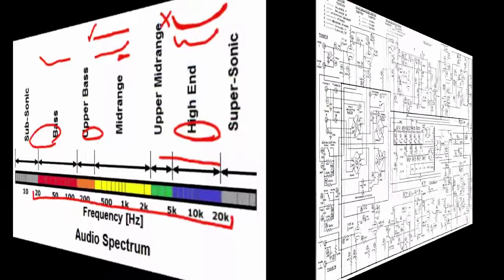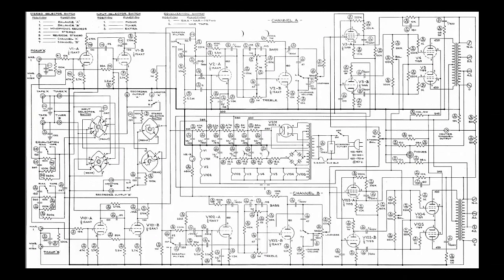Now let's bring the video home and look at the Scott 222C integrated amplifier schematic. Right here you can see this is 50 to 60 Hz at somewhere around 105 to 125 volts — in other words, your 120-volt wall outlet — coming into the power supply. In this transformer you're actually raising the amplitude of that signal: 420 volts, 330 volts, 285 volts — creating different voltage amplitudes to send throughout the amplifier. We're also converting the AC signal into DC with some of these components.